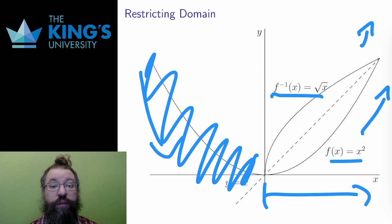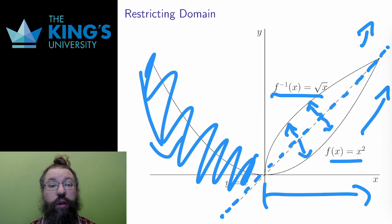Of one final note, the graph of an inverse is a mirror of the graph of the original over the diagonal line y equals x. You can see that here with the quadratic and the square root. They are the same, mirrored over that line, and this is true for all inverses.